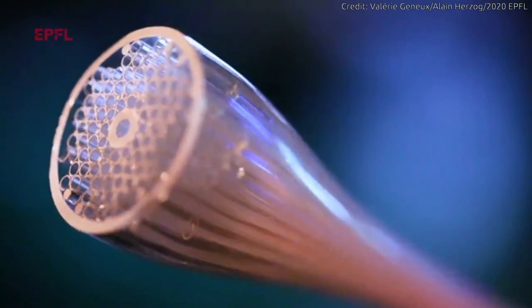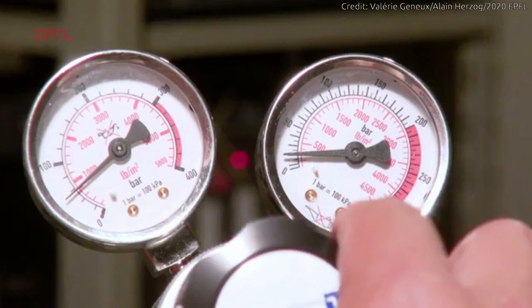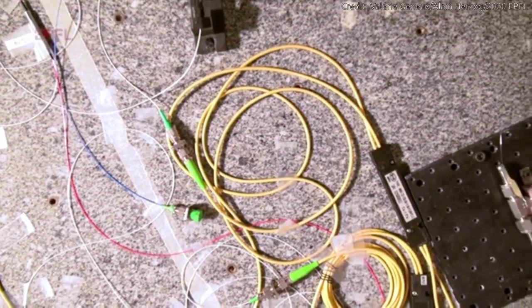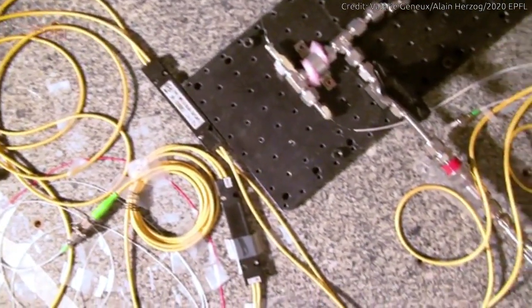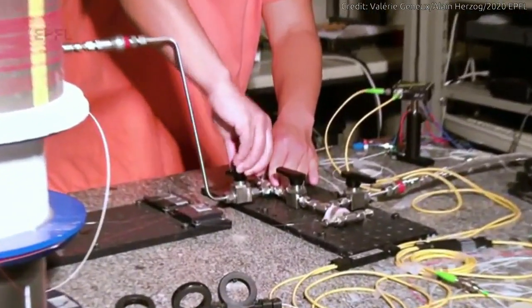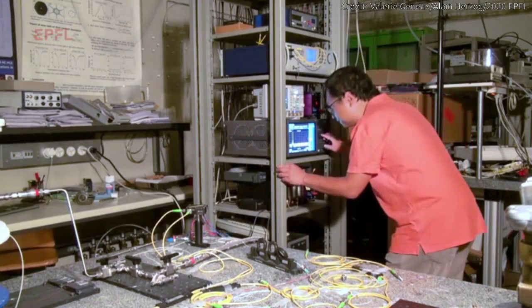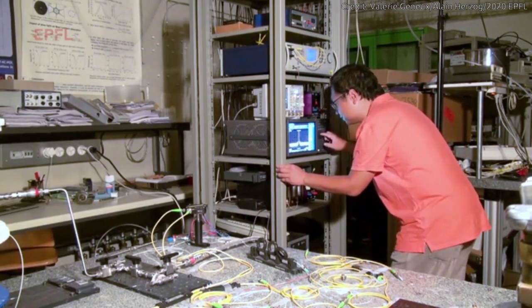Today's optical fibers usually have a solid glass core, so there's no air inside. Light can travel along the fibers, but loses half of its intensity after 15 kilometers. It keeps weakening until it can hardly be detected at 300 kilometers. So to keep the light moving, it has to be amplified at regular intervals.